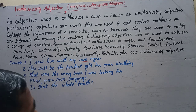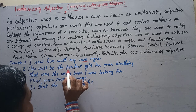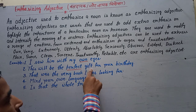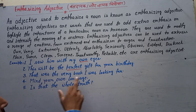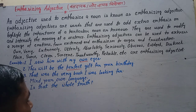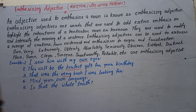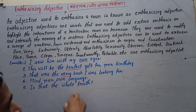Another example: 'This is a perfect gift for your birthday.' Here, the word 'perfect' is emphasizing the gift. Similarly, 'a very good book' — the word 'very' emphasizes the book that we were looking for. 'I was looking for the very last one, a very good book.'